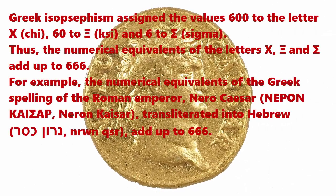Greek isopsyphism assigned the values 600 to the letter chi, 60 to xi, and 6 to sigma. Thus, the numerical equivalence of the letters chi, xi, and sigma add up to 666. For example, the numerical equivalence of the Greek spelling of the Roman emperor Nero Caesar, transliterated into Hebrew, adds up to 666.